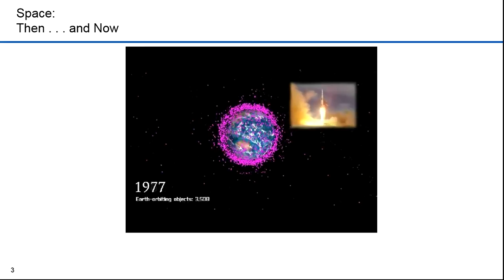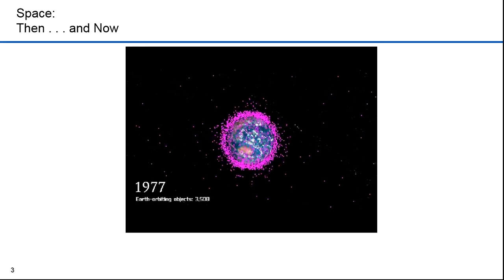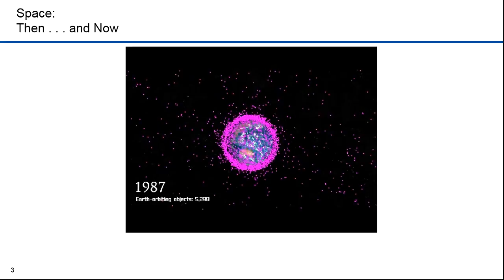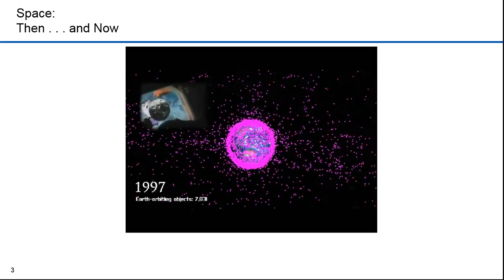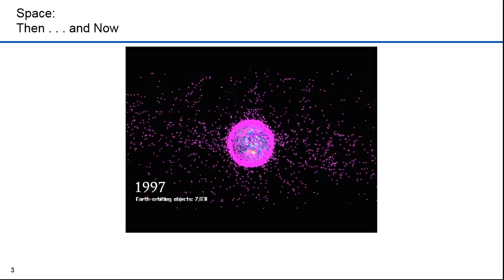By 1967, there were 930 objects in space. Ten years later, 3,500. Ten years after that, almost 5,300. And ten years after that, 7,831.